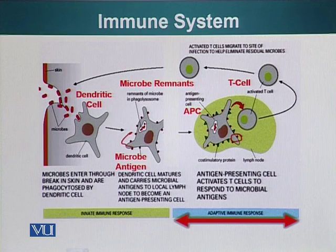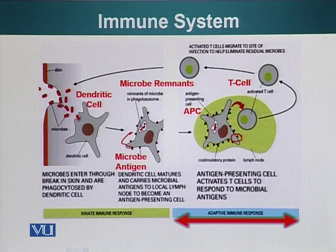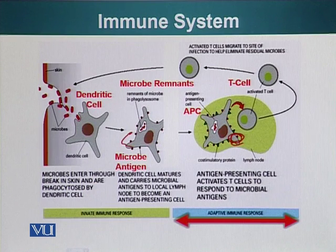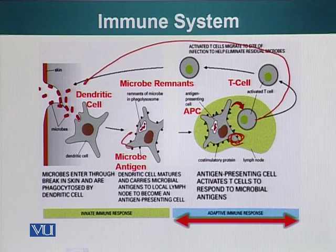Dendritic cells are part of the innate immune system because they are not specific — they will eat any microbe, whether bacteria or virus, regardless of what type it is. The adaptive immune system, which includes T cells and B cells, is specific. We have many different types of T cells in our body, and only the T cells that have the ability to recognize a particular pathogen will get activated. For example, if it is salmonella bacteria, only T cells that can recognize pieces of salmonella will be activated. One of the first things they do is go back to the site of infection and help other phagocytic cells kill and destroy the salmonella.